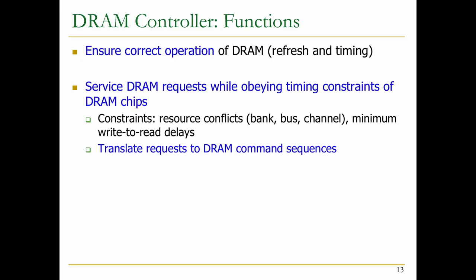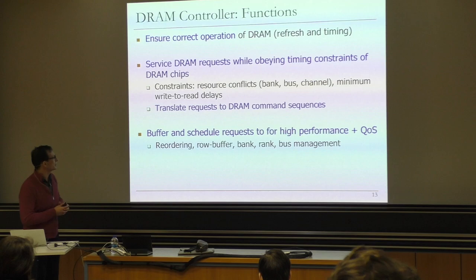As we will see, there are more than hundreds of different timing parameters, because of the way DRAM is designed to minimize latencies as much as possible. You need to translate requests to DRAM command sequences. The memory controller needs to buffer and schedule requests for high performance and quality of service — this requires reordering and managing the row buffer. How long do you keep the row buffer open? When do you close it?